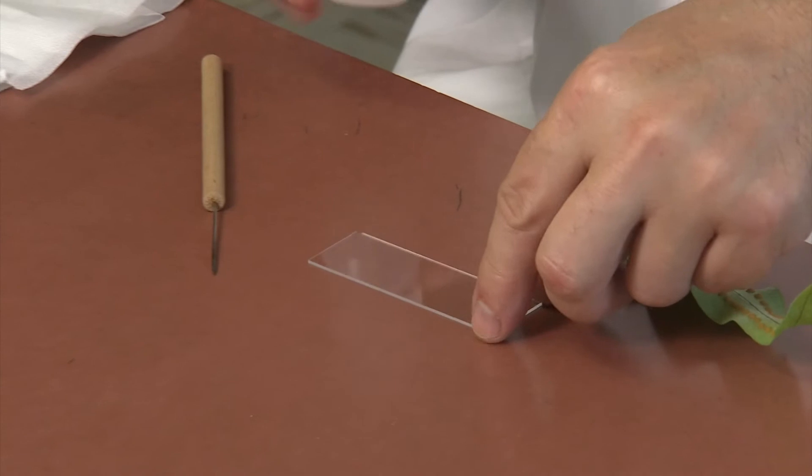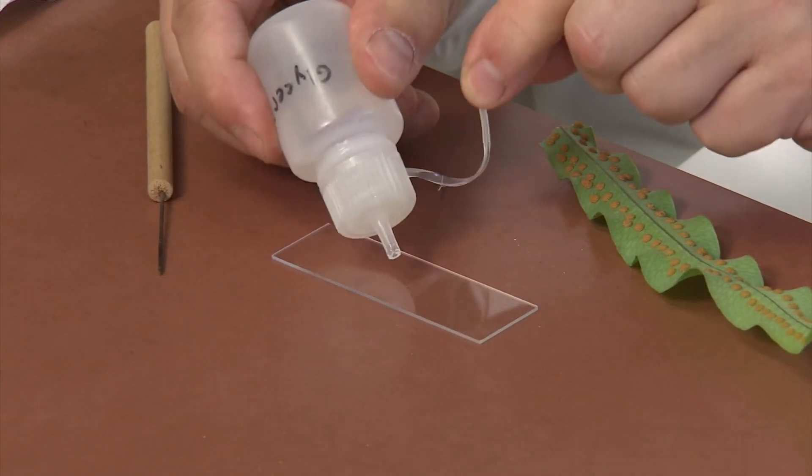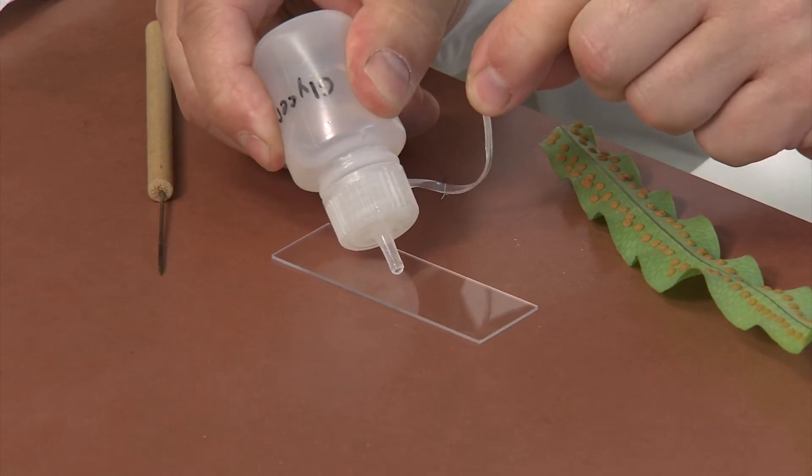Place a clean microscope slide on a flat surface. Add a drop or two of glycerin to the center of your slide.